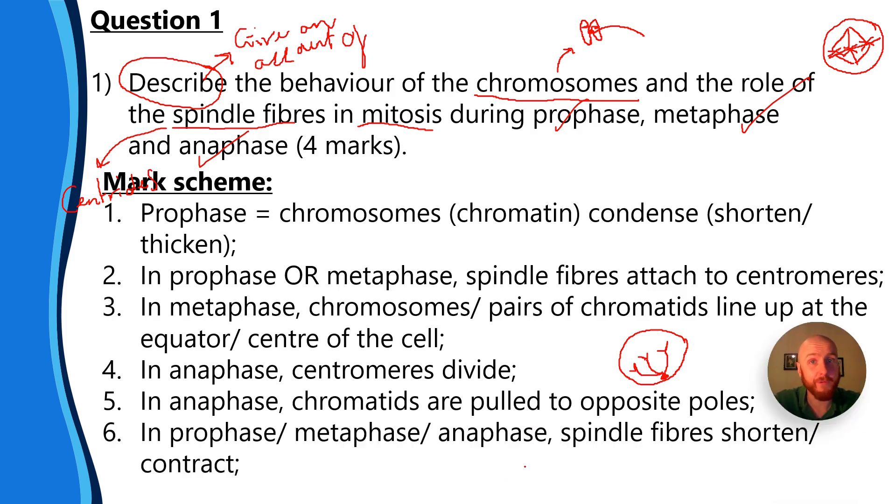So finally, a sixth way to get one of those marks is to say that in prophase, metaphase or anaphase the spindle fibers shorten or contract. So you could have got the mark here for saying that in prophase the spindle fibers shorten. Alternatively you could have said metaphase the spindle fibers shorten. Wherever there's a forward slash in the mark scheme, either or is totally acceptable.